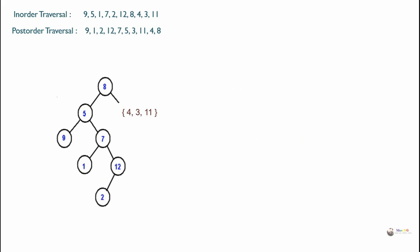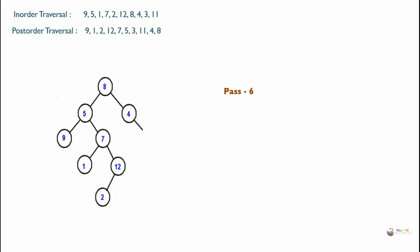Now look at the right subtree: 4, 3, and 11. Out of 4, 3, and 11, element 4 is coming first from the end of post-order traversal. In in-order traversal, 3 and 11 are both on the right of 4, so they form the right subtree. It can be rewritten with root as 4 and 3 and 11 on the right.